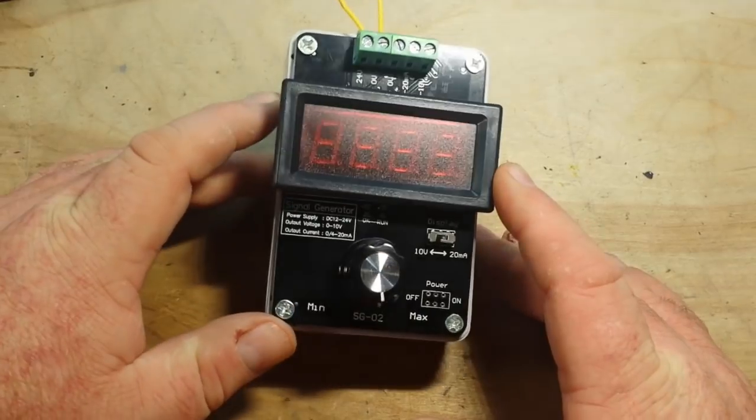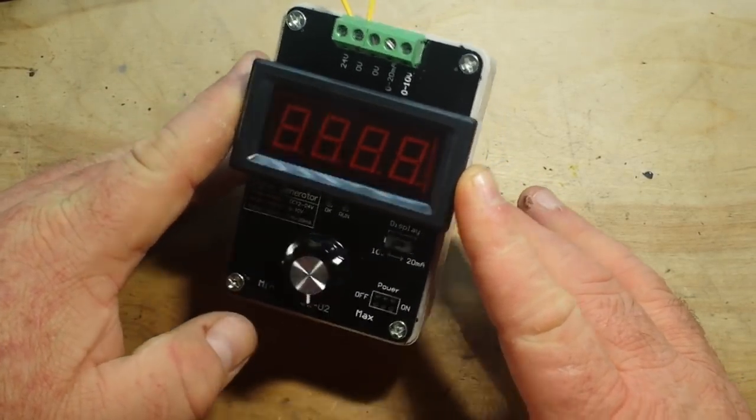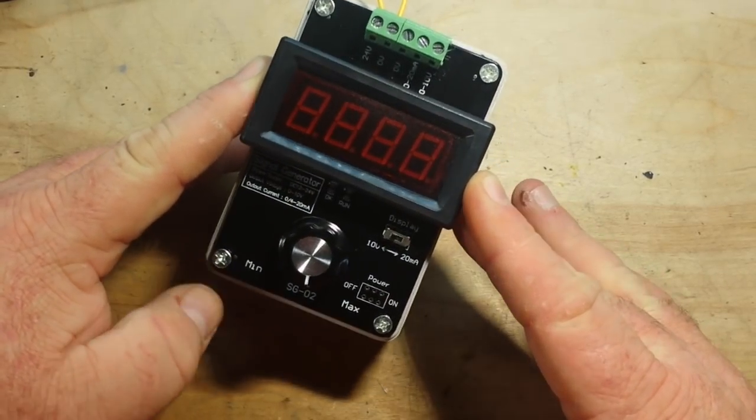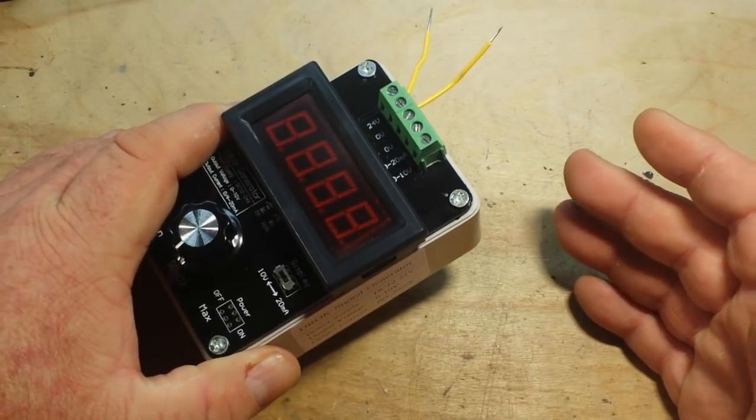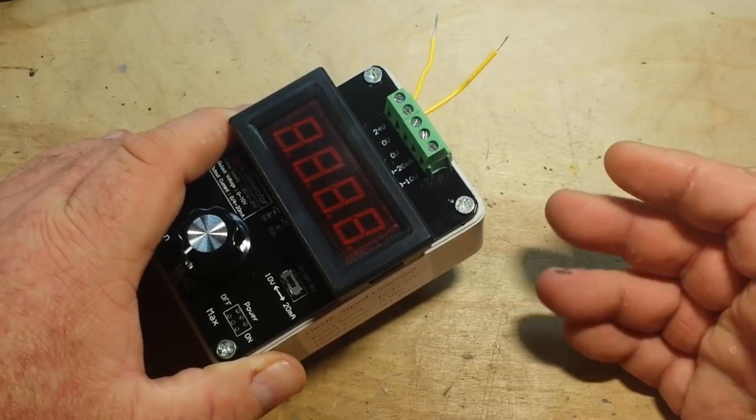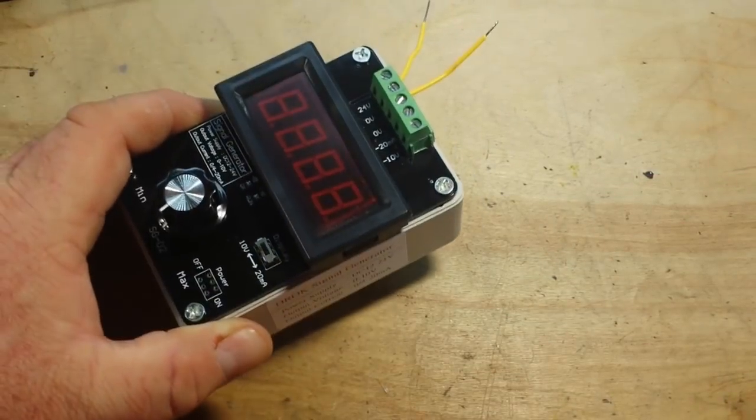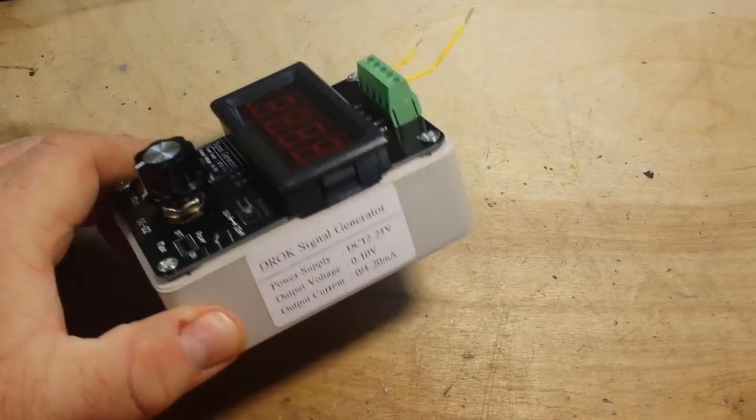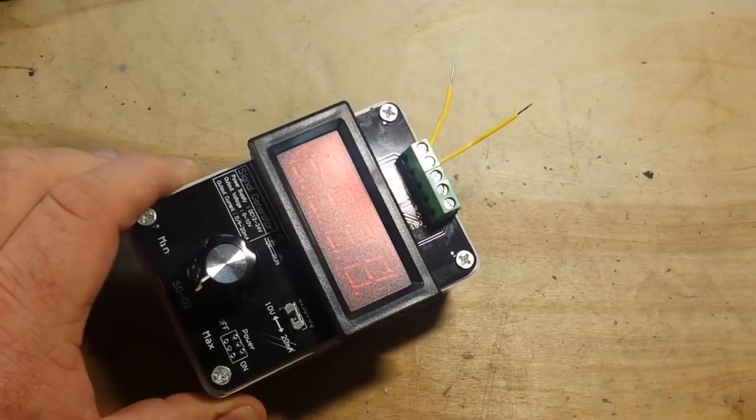It needs 12 to 24 volts in. It outputs 0 to 10 volts or 4 to 20 milliamps out. These kinds of devices are used in testing different things such as programmable logic circuits, valves and sensors. They're also known as an analog simulator. Fluke makes them for three or four hundred dollars, but this is 20 bucks or so from Amazon. So I thought we'd give it a little play.